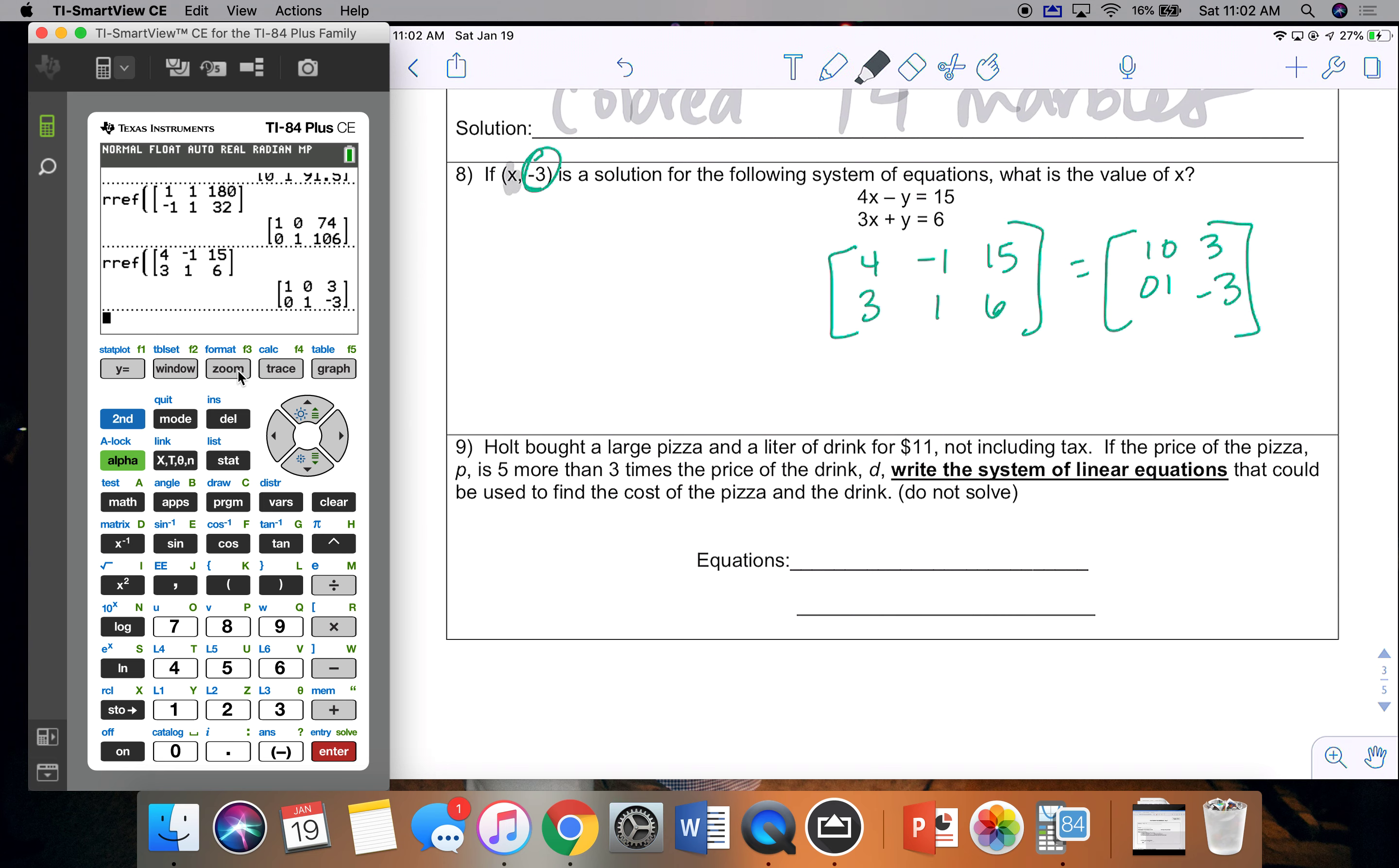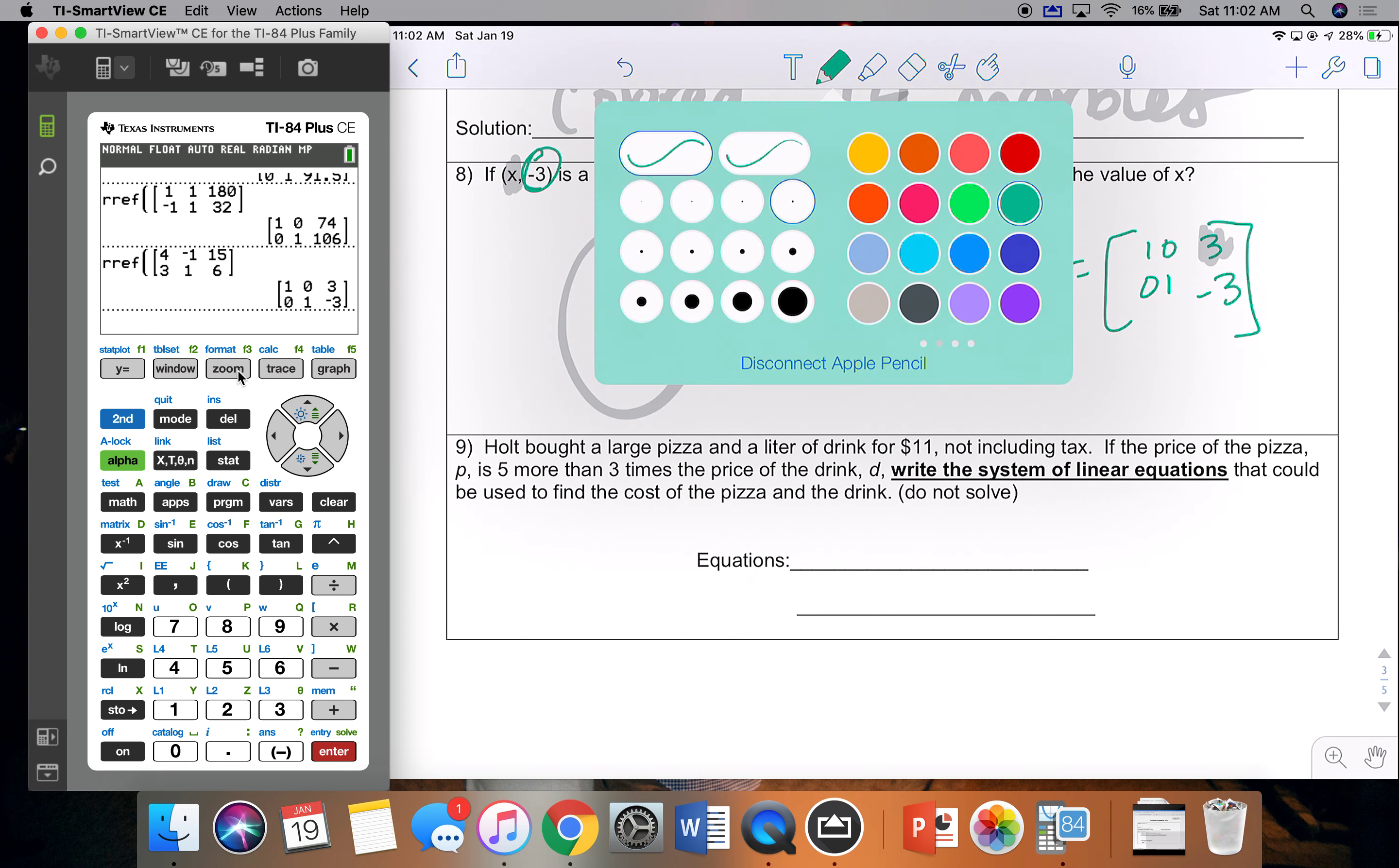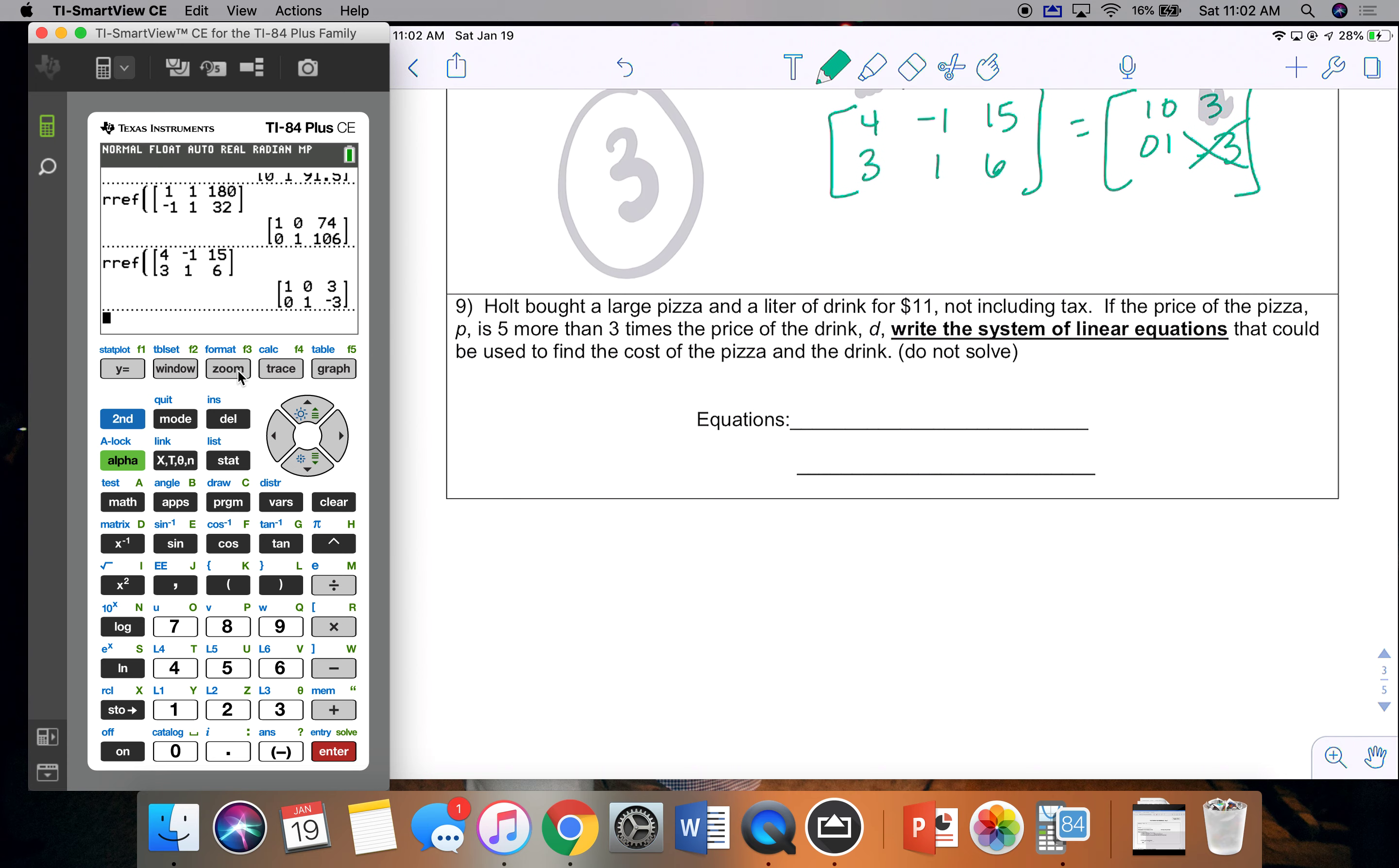So remember, they are asking for x. x was on the left side, so x pops out first, so x is 3. Also, something else you can do to remember is they've already given you negative 3, so negative 3 can't be the one that they're asking for, because that would literally be the easiest problem ever.